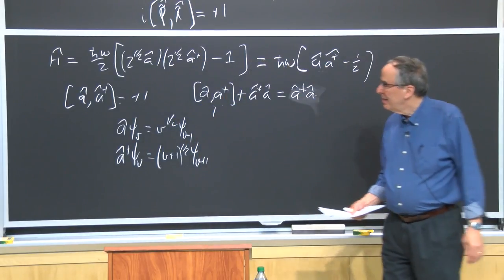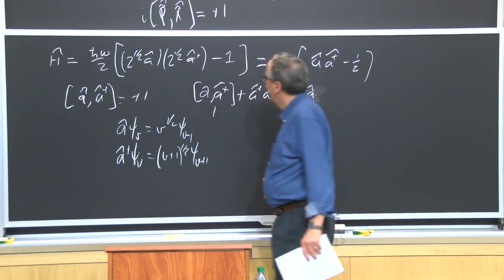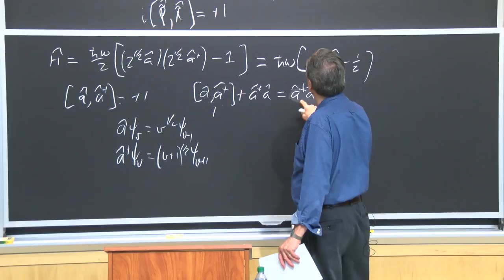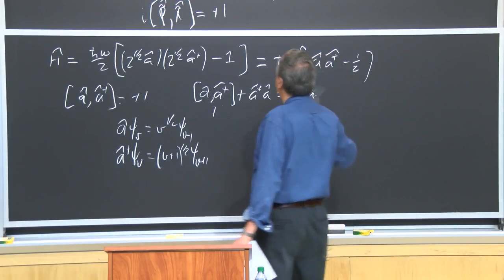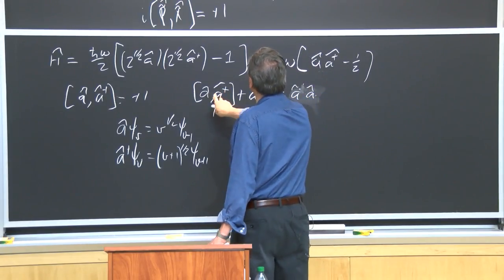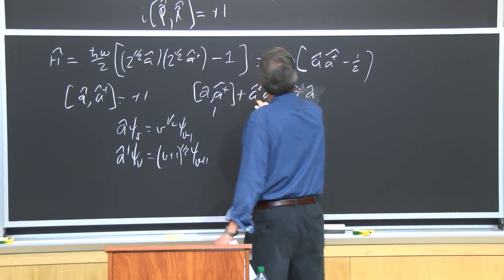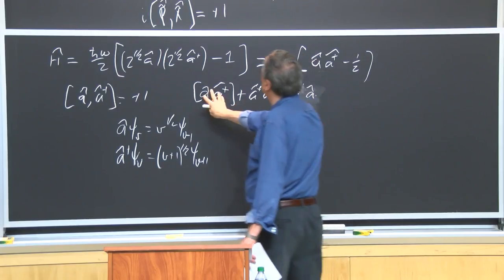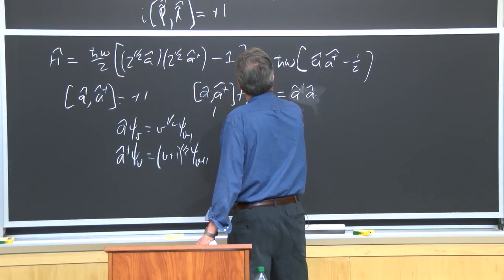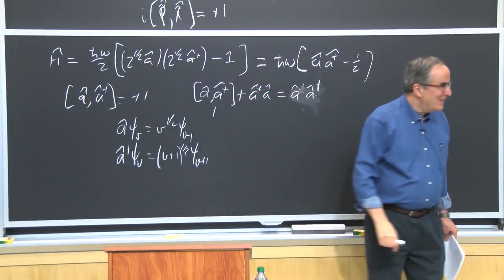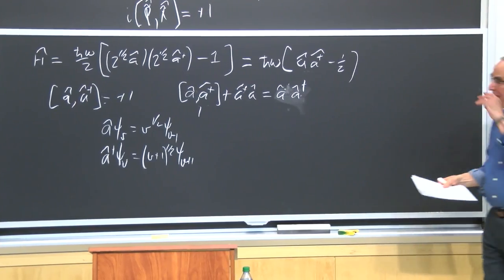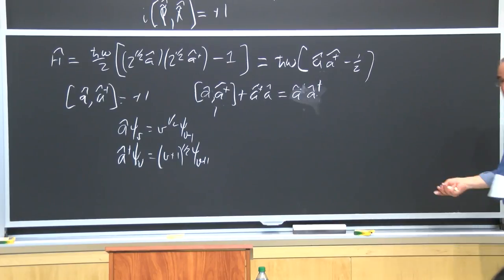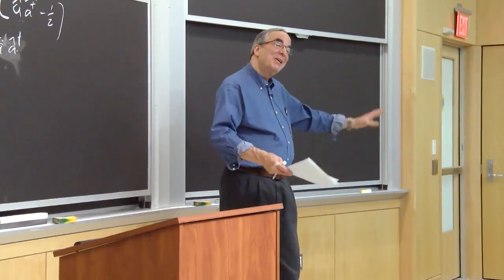A student asks about the commutator line. The professor clarifies: the commutator of â with â† is â·â† minus â†·â, so on the right hand side you need to move the dagger. It's very easy to get lost — once you've made a mistake that's built into your logic, you're never going to see it. It took a couple of minutes to even accept the insight from the TA.